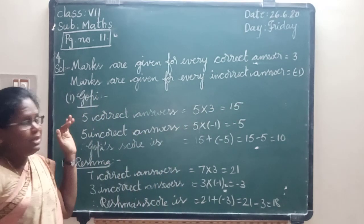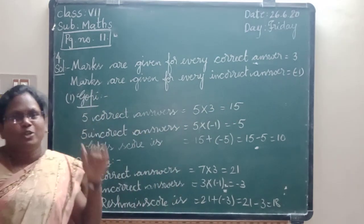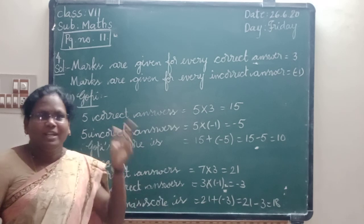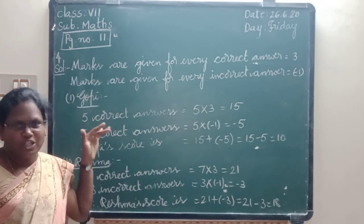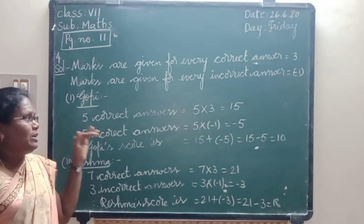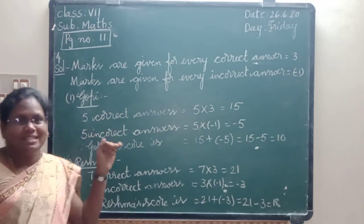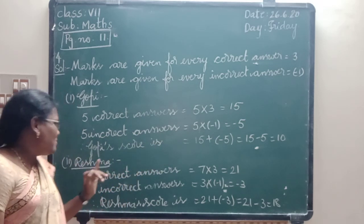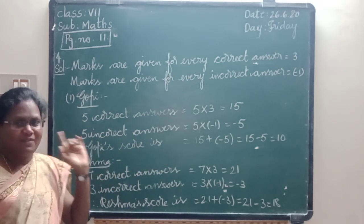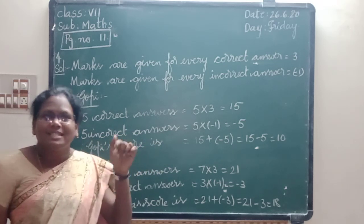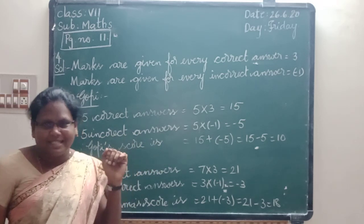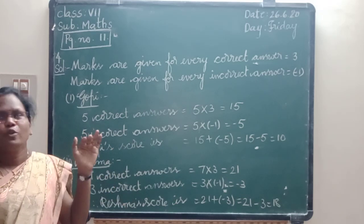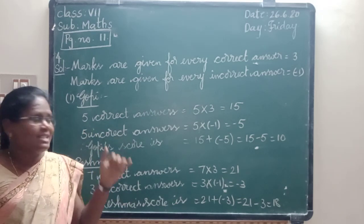Here, 3 students attempted the test. Who are they? Gopi, Reshma, Rashmi. Gopi got 5 correct answers and 5 incorrect answers. Reshma got 7 correct answers and 3 incorrect answers. Rashmi got 5 correct answers and 4 incorrect answers.